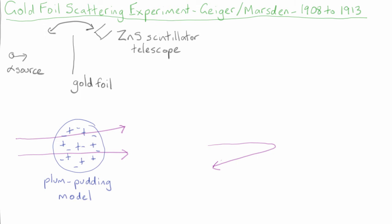On consideration, I realized that this scattering backward must be the result of a single collision. And when I made calculations, I saw that it was impossible to get anything of that order of magnitude unless you took a system in which the greater part of the mass of the atom was concentrated in a minute nucleus. It was then that I had the idea of an atom with a minute massive centre carrying a charge.